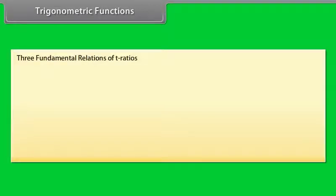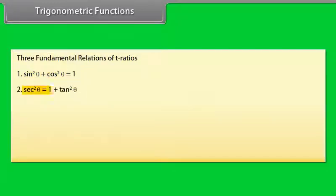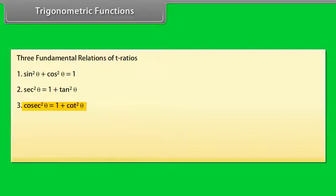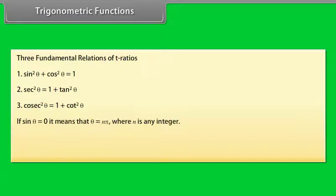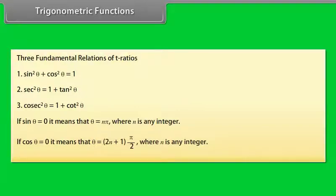Three fundamental relations of T-ratios: sin²θ + cos²θ = 1; sec²θ = 1 + tan²θ; cosec²θ = 1 + cot²θ. If sinθ = 0, then θ = nπ where n is any integer. If cosθ = 0, then θ = (2n+1)π/2 where n is any integer.